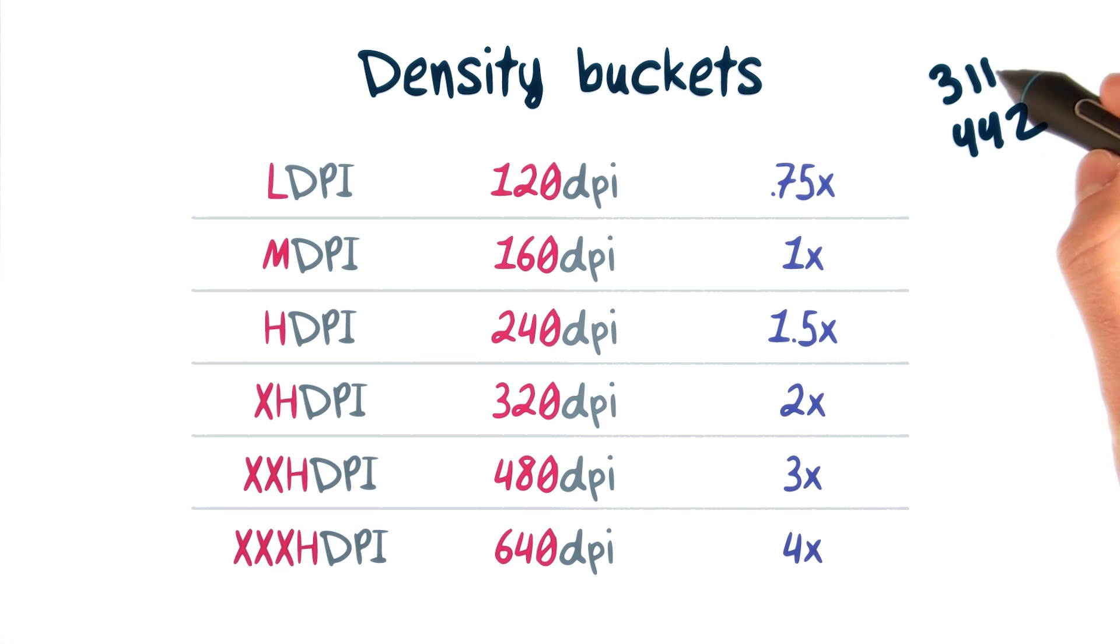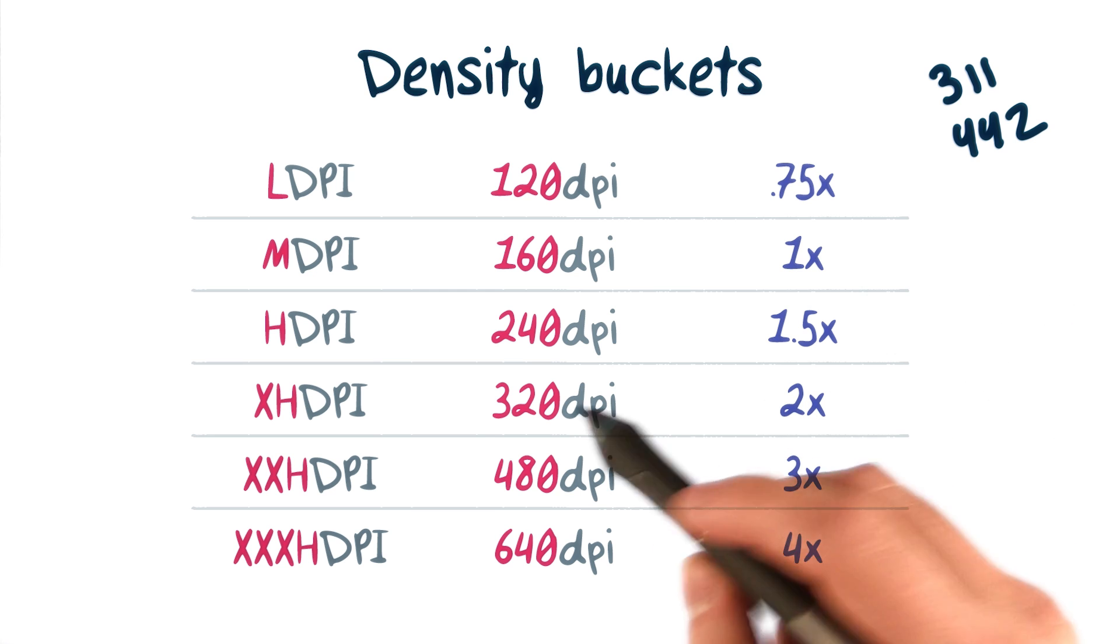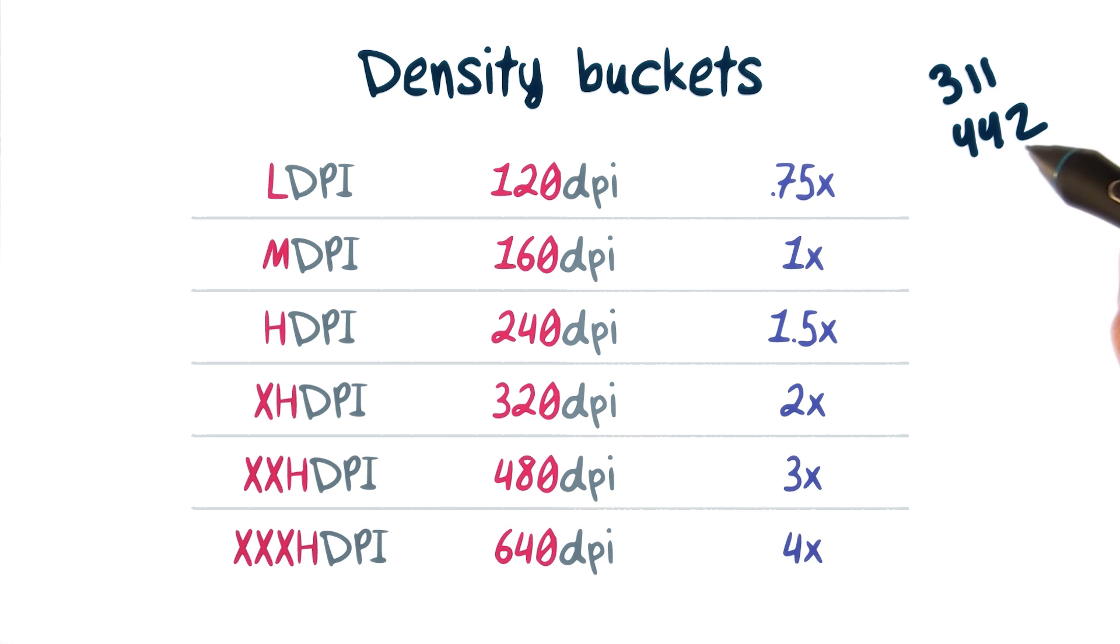So a device with a 3.11 dpi screen might get assigned 320 dpi or xhdpi, and a device with a 4.42 dpi screen might get assigned xxhdpi or 480 dpi.